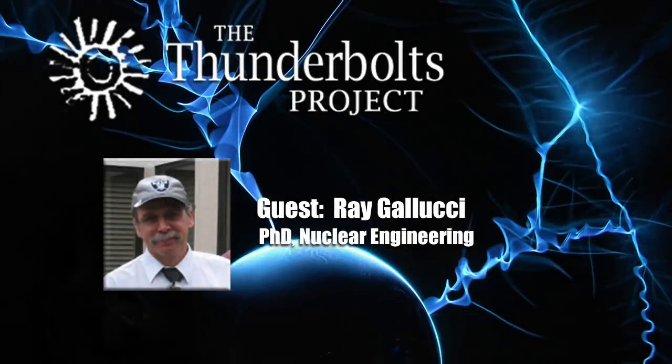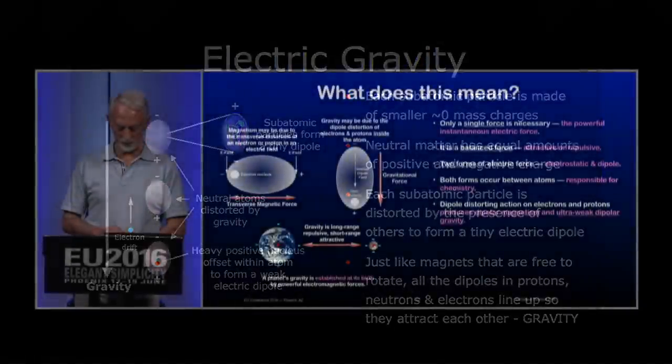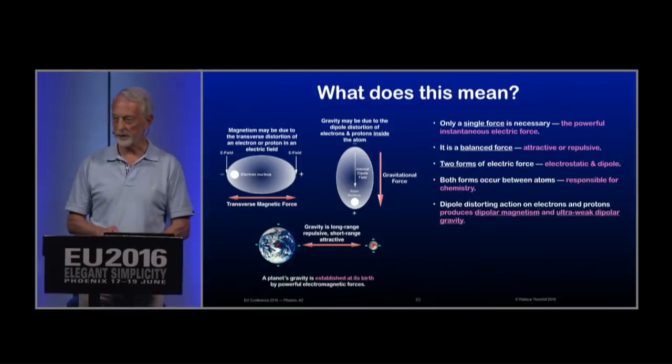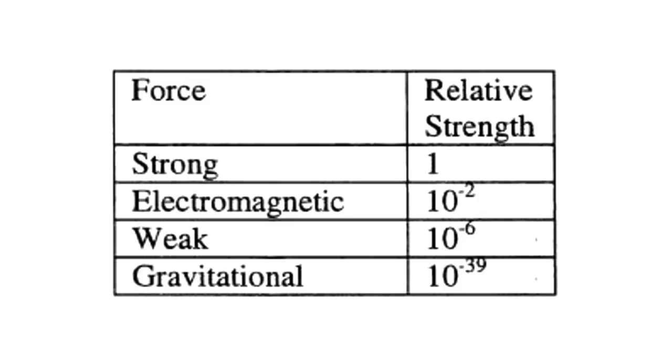I first came across EU theory back in 2011, either at one of the early conferences or via the website. I came across Wal Thornhill's theory. Given that there's 39 orders of magnitude between the strengths of electromagnetic and gravitational forces, it makes one wonder what's going on, plus the fact that electromagnetism can have a repulsive aspect as well.